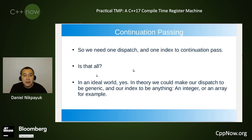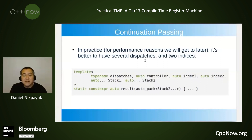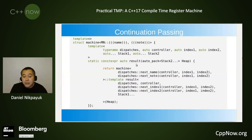In summary, we need one dispatch and one index to continuation pass. In an ideal world, yes — in theory we can make our dispatch generic and our index anything, an integer or an array. In practice, for performance reasons, it's better to have several dispatches and two indices. Instead of naming them individually, we bind them together in a struct or class and put that name here so we can call their respective member functions.